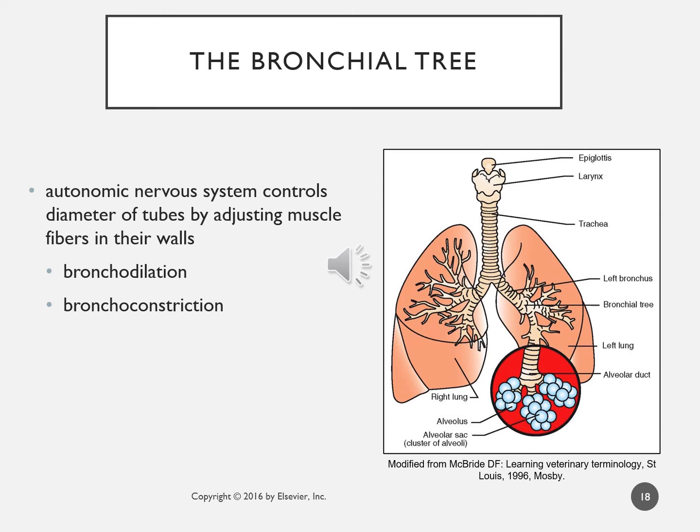Within the bronchial tree, the autonomic nervous system controls the diameter of the tubes by adjusting smooth muscle fibers in their walls. This can cause bronchodilation when increased air capacity is needed — such as running — and bronchoconstriction to make the bronchioles smaller, which can be normal for regular respiration or pathological, as in asthma where bronchoconstriction causes significant airway narrowing.